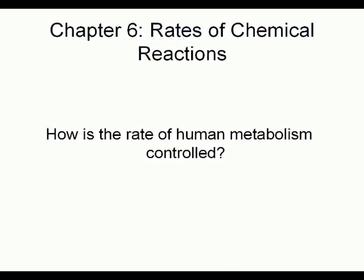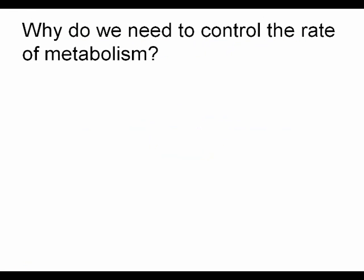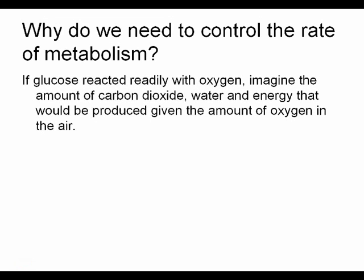The next connection is between metabolism and rates of chemical reactions. How is the rate of human metabolism controlled? First, we must consider why we need to control the rate of reaction at all. Glucose doesn't react readily with oxygen. If it did, a lot of excess waste — namely carbon dioxide and water — and energy would be created, considering the amount of oxygen available in the air that we breathe in.